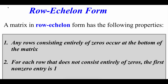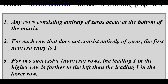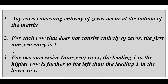A matrix in row echelon form is very similar to a system of equations in row echelon form but with some slight differences. If we have a row that consists entirely of zeros, we move it all the way down to the bottom. Each row that does not consist entirely of zeros must have a 1 as its first non-zero entry. And if we have two successive non-zero rows, the leading 1 in the higher row has to be further left than the leading 1 in the lower row — giving it that stair-step look.